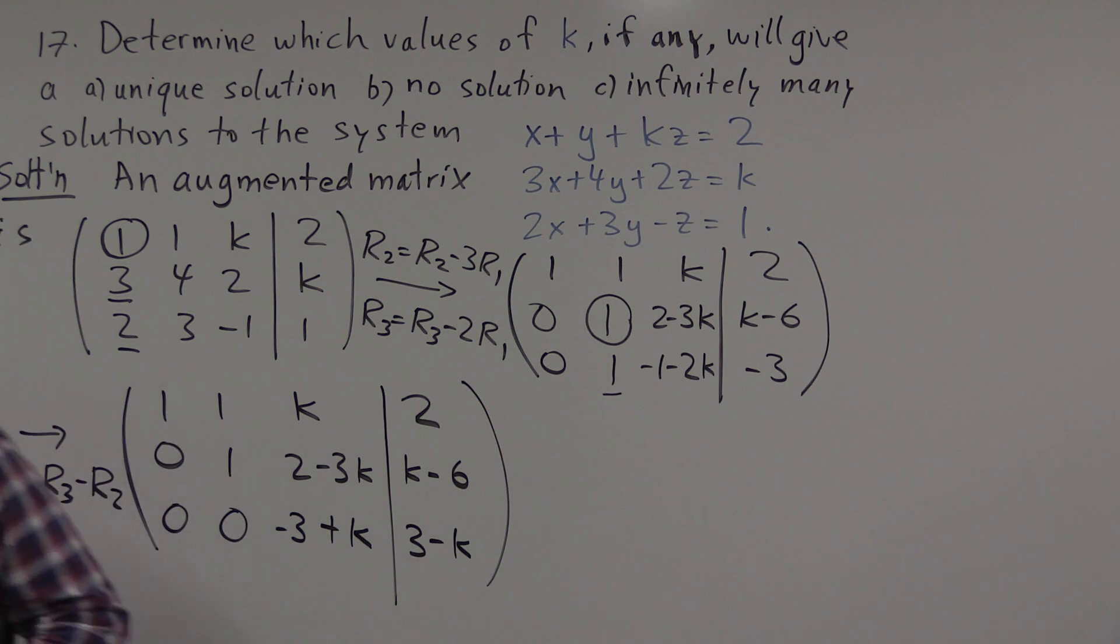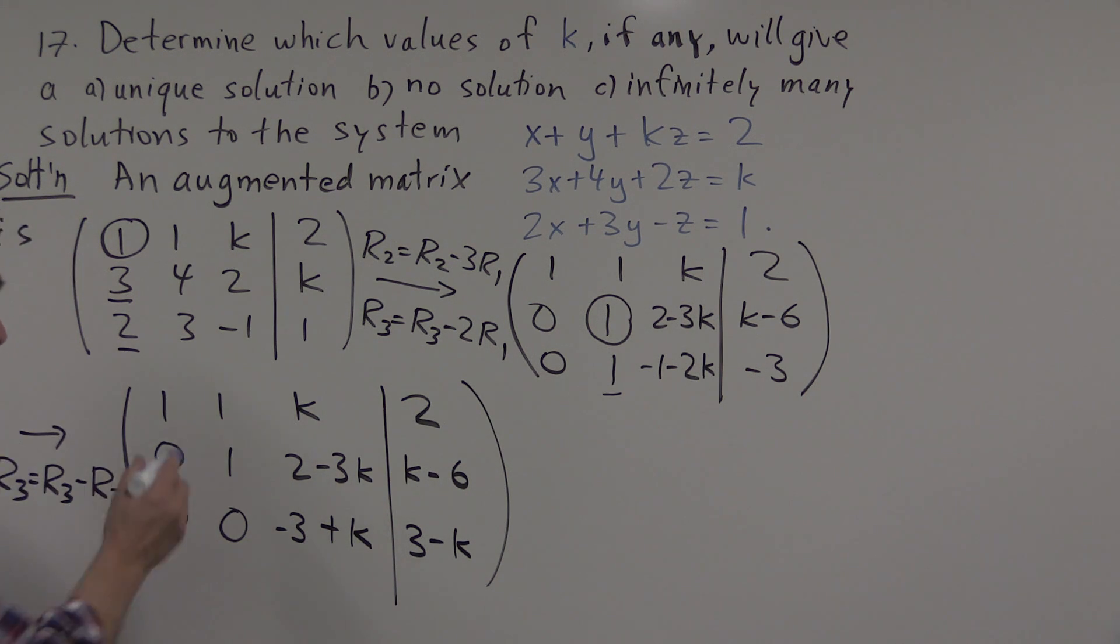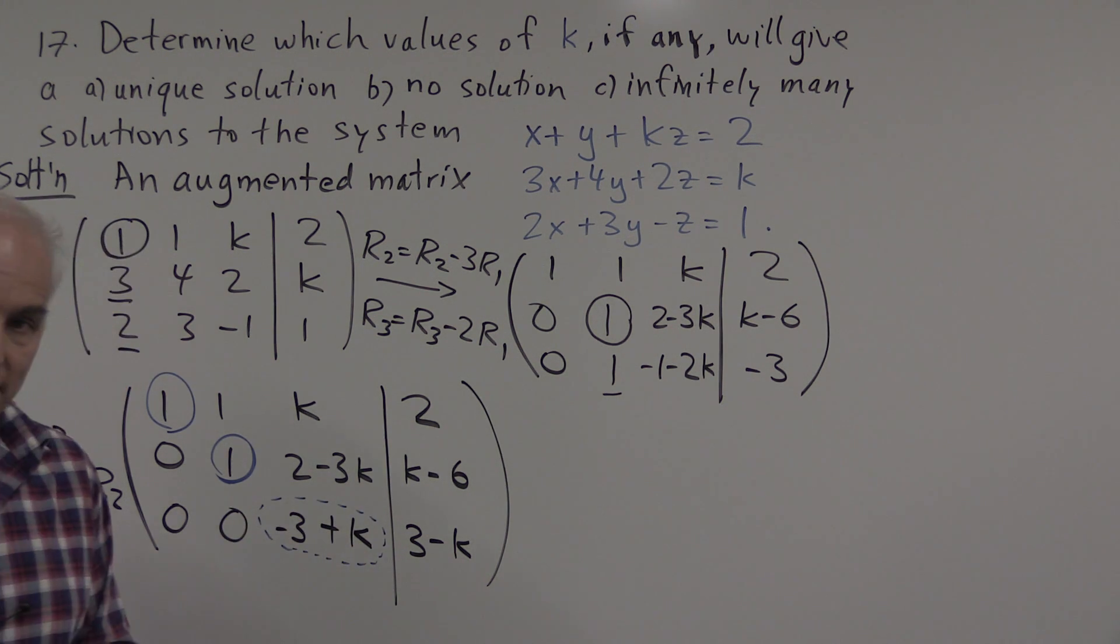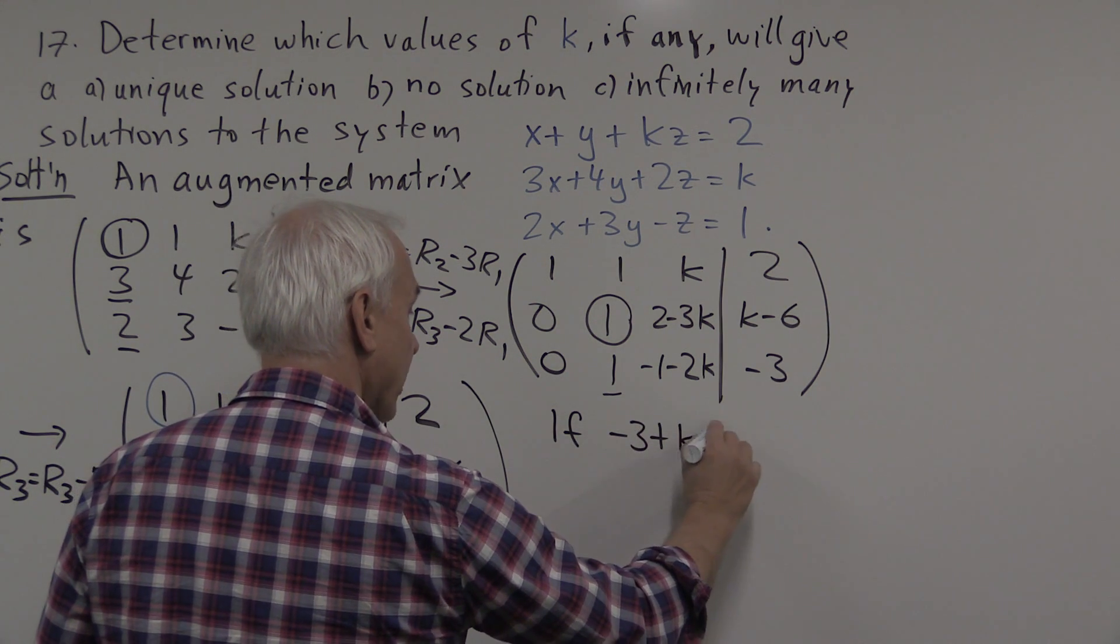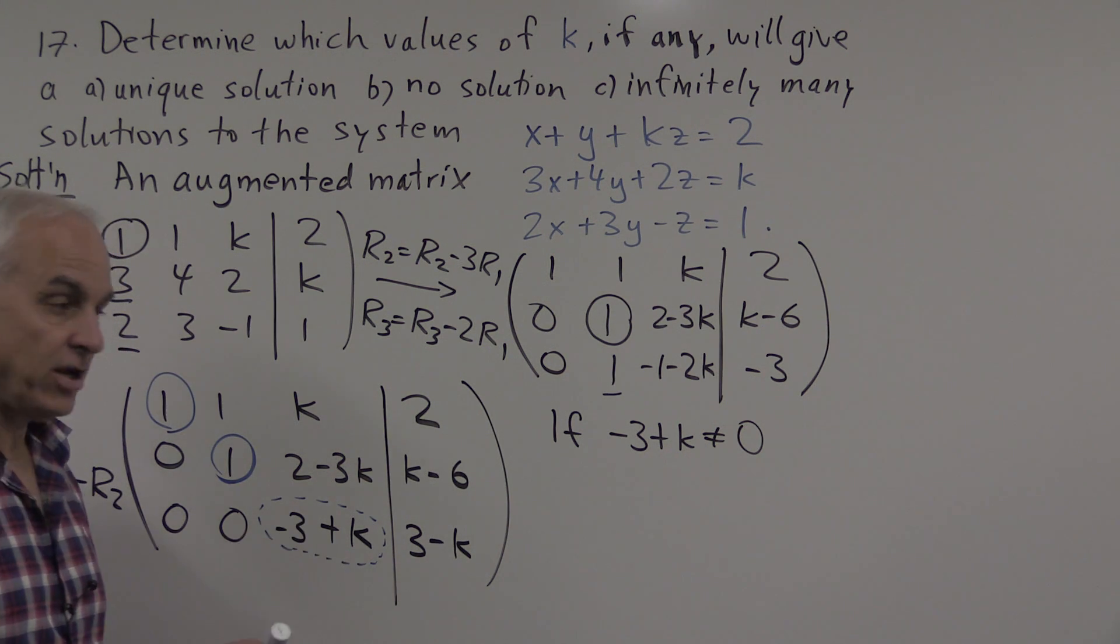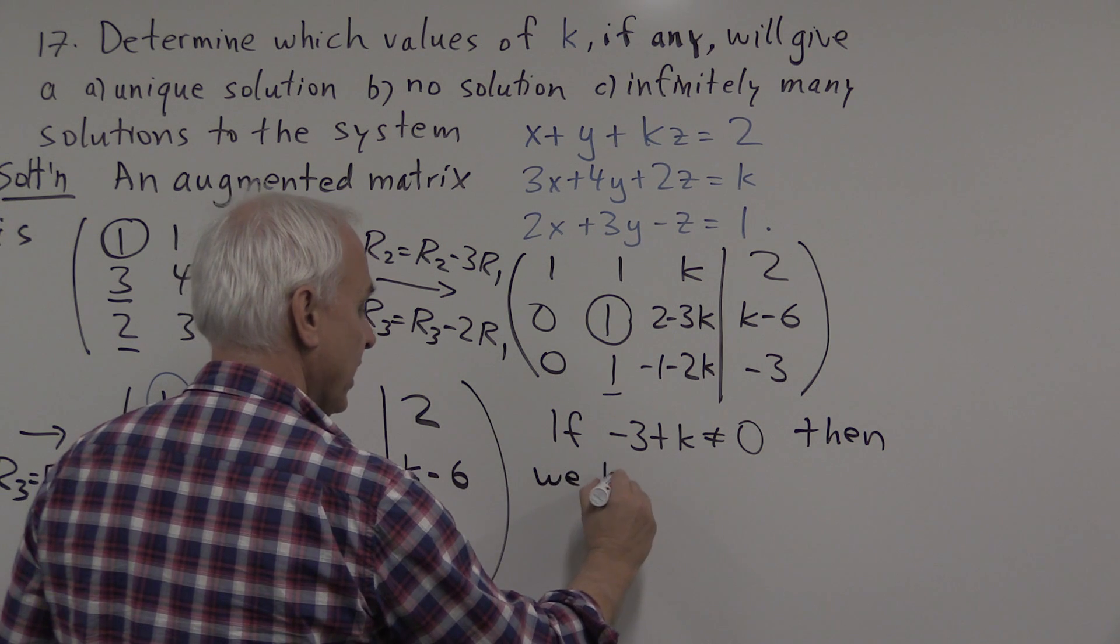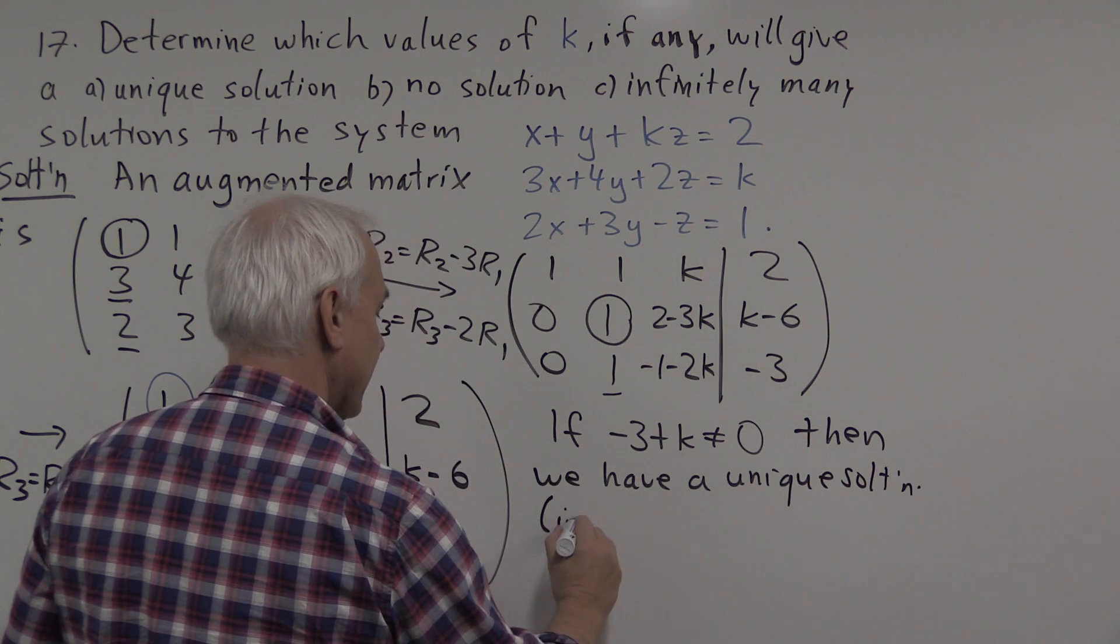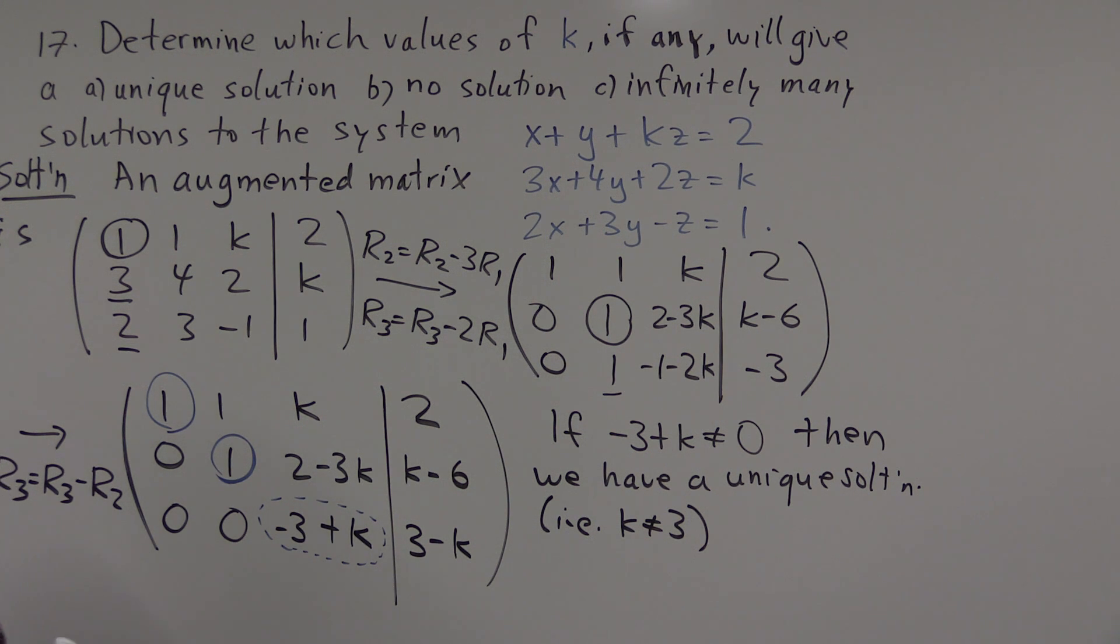Now we're in a position to try to figure out whether or not this thing has solutions, and if so, how many solutions it has. And it will depend on the values of k. Here we have a leading entry, and here we have a leading entry. And this is possibly a leading entry. It will be a leading entry if it is non-zero. So if minus 3 plus k does not equal 0, then this is a leading entry, and we have three leading columns, which means we have a unique solution. In other words, that's the case when k does not equal 3.